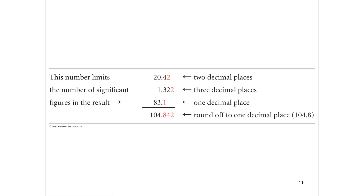Here's another example. If I have 20.42 — that's two decimal places — I add 1.322 — that's three decimal places — I add 83.1 — that's one decimal place. That means when I get an answer, the calculator will give me something like 104.842, but I have to round it to one decimal place because the least precise measurement was only to the tenths. So these round off, and your answer would be 104.8.